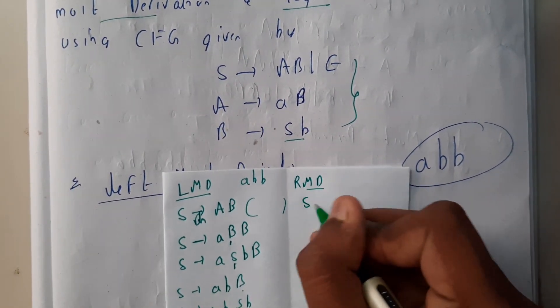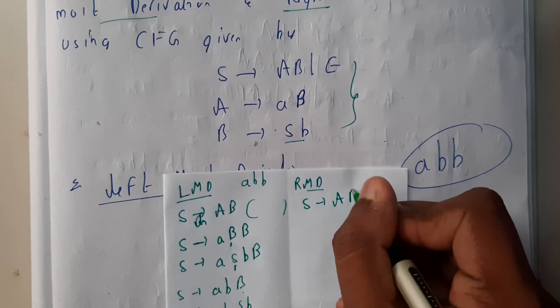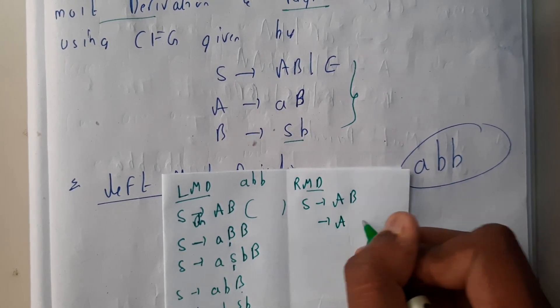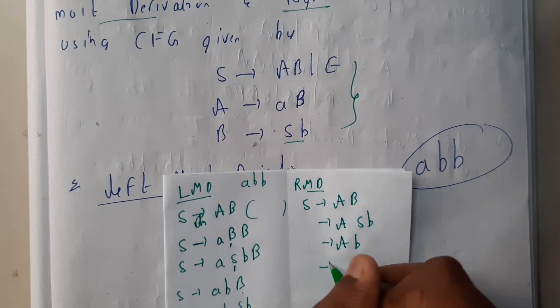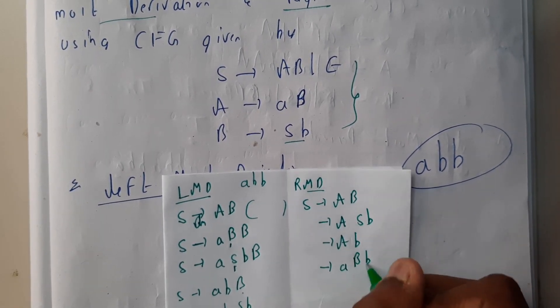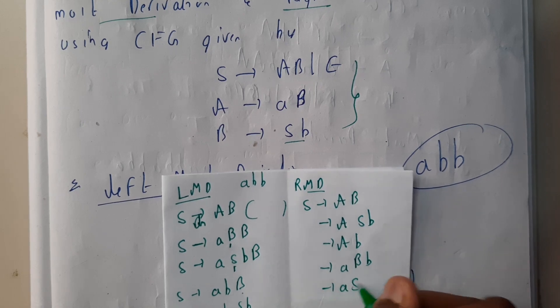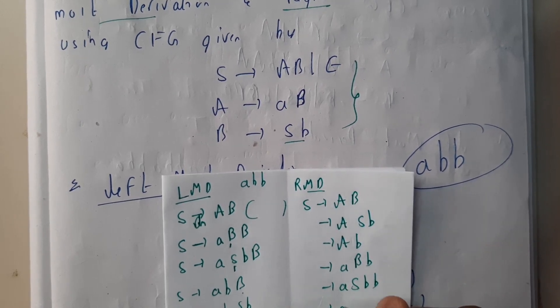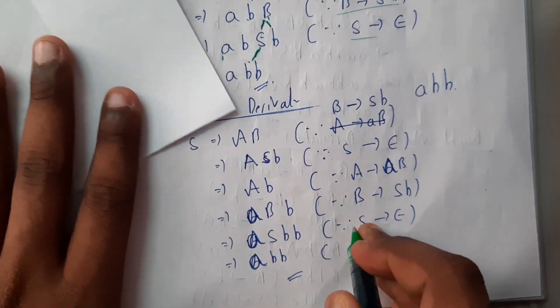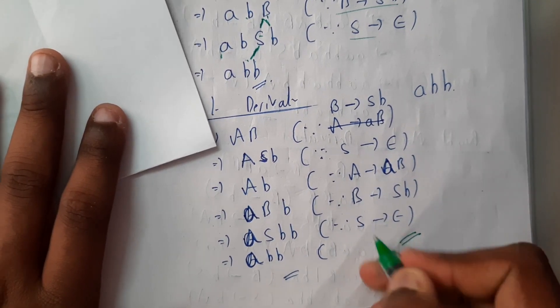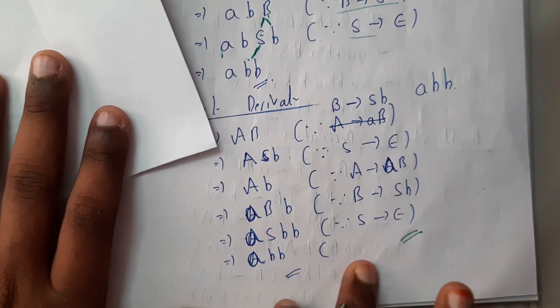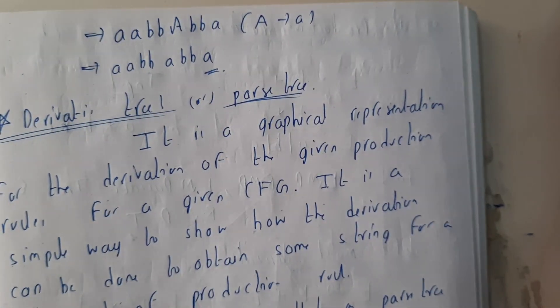Now let us try the rightmost derivation. In rightmost derivation, we start from the right side. S tends to AB. First, divide this B as SB, then A becomes AB, giving 'aBSB'. Then S becomes AB, and B becomes SB again, and S becomes epsilon. Please try to write the steps — I'm going fast here, so when writing an exam please write the production rules in brackets.